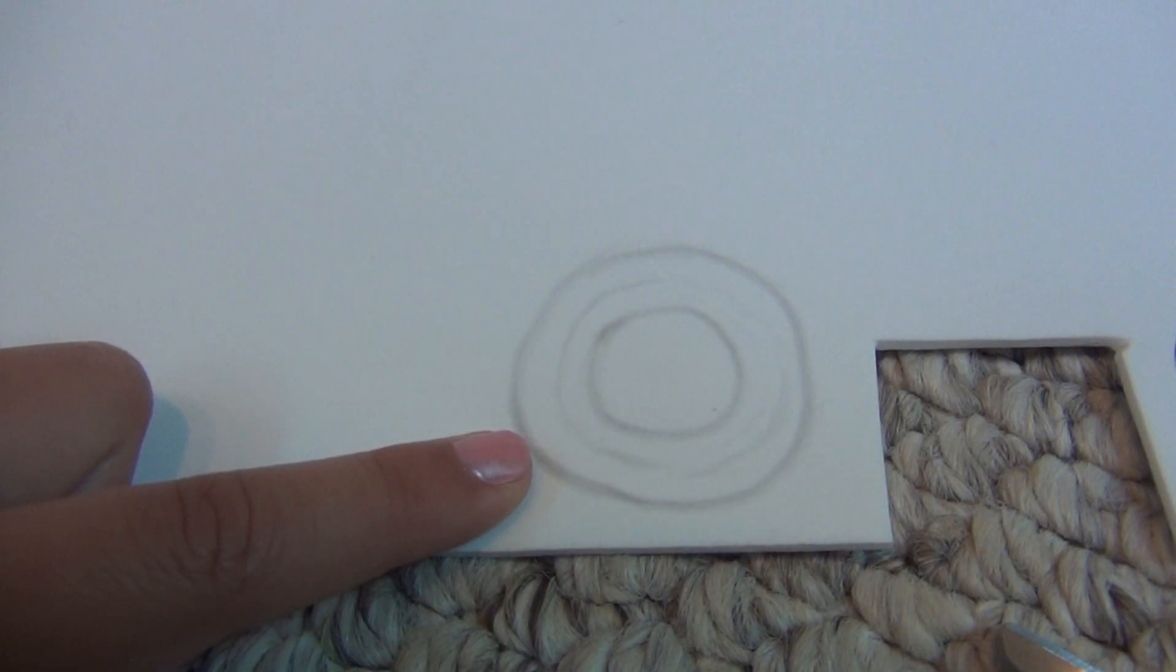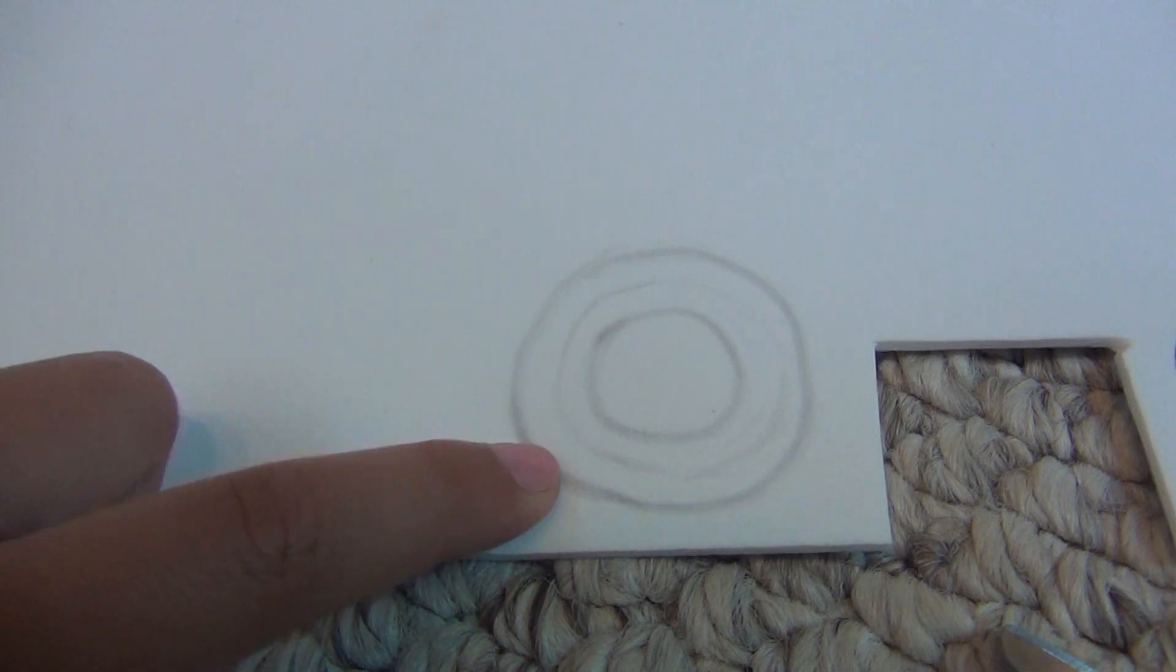Then, draw another circle only bordering your first circle. Use your scissors to cut out both circles.